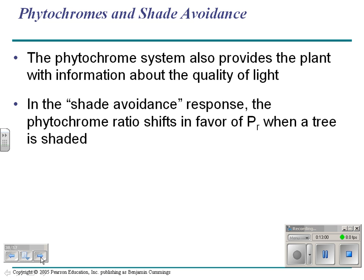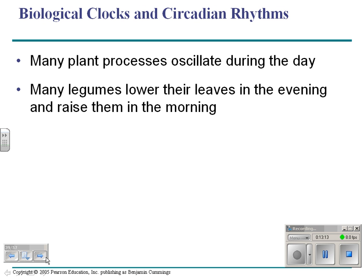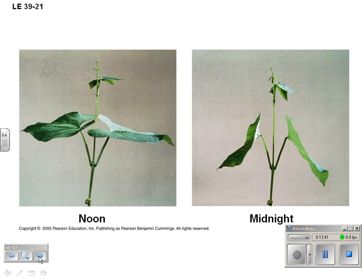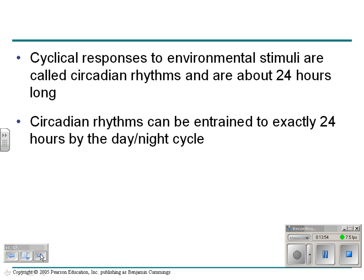The phytochrome system also helps plants detect the quality of light. The phytochrome ratio shifts in favor of red light when a tree is in shade — a tree knows when it's shaded without having a brain or eyes, making phytochromes kind of like the plant's eyes. Plants also have circadian rhythms — 24-hour cycles that happen in both plants and animals. For example, legumes like beans and peas lower their leaves in the evening and raise them in the morning. You can train circadian rhythms to 24 hours, and it's the switching on and off of phytochromes that affects the plant.